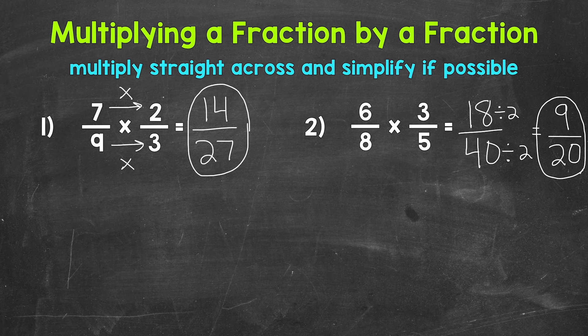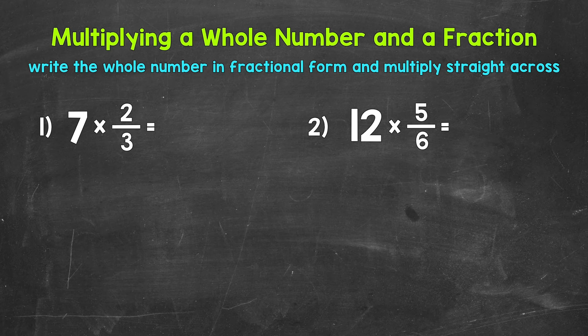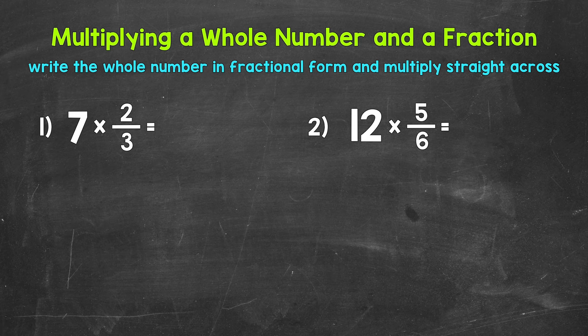There's how to multiply a fraction by a fraction. Let's move on to multiplying whole numbers by fractions. Let's jump into our examples, starting with number 1, where we have 7 times 2 thirds. When we multiply fractions, we multiply straight across — multiply the numerators and then the denominators. Since we have a whole number, 7, we need to write it in fractional form so we have a numerator and a denominator to multiply straight across.